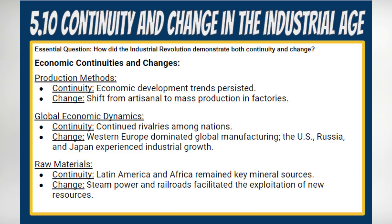Economic Continuities and Changes. 1. Shift in Production Methods. Continuity: the era saw a continuation of the trend of economic development and wealth accumulation, as seen in previous agricultural revolutions. Change: the shift from artisanal, handcrafted goods to mass production in factories marked a significant departure. Automation led to the rise of unskilled labor and standardized, identical products.